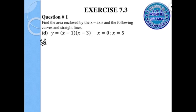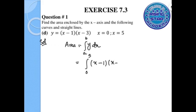In the next part, we write the area formula: A equals the integral from a to b of y dx. The lower value is 0, the upper value is 5, and y equals x minus 1 times x minus 3. Before integrating, we expand: x minus 1 times x minus 3 becomes x squared minus 4x plus 3.